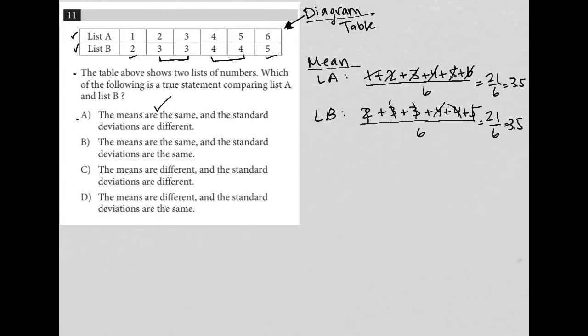And the standard deviations are different. Well, standard deviation just has to do with how far away each of the values in the list are from the mean value. So the standard deviation for list A must be different than the standard deviation from list B, just because for list B, we have numbers that are clustered right up close to that mean.